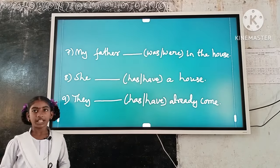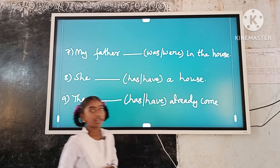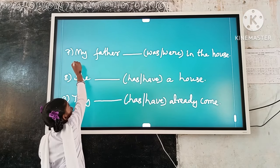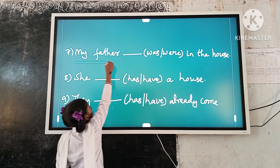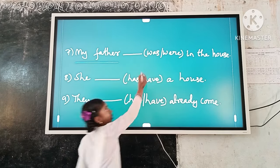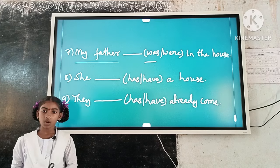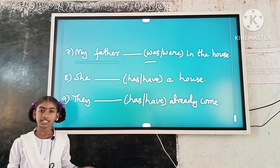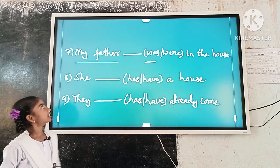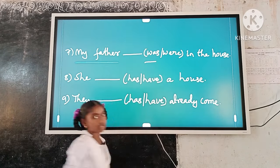Example number 7: My father dash in the house. Here, the subject is singular. 'Was' is a singular verb form. So, singular subject and singular verb form agree. The answer is: My father was in the house.